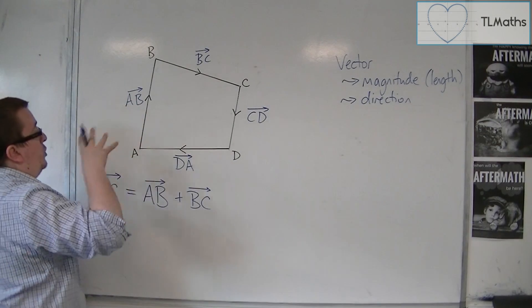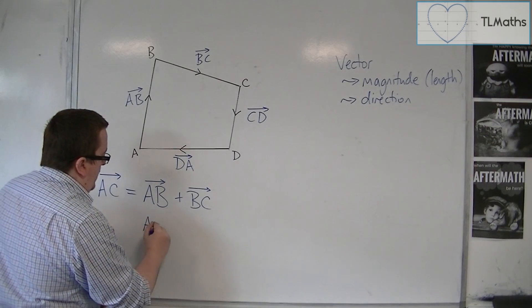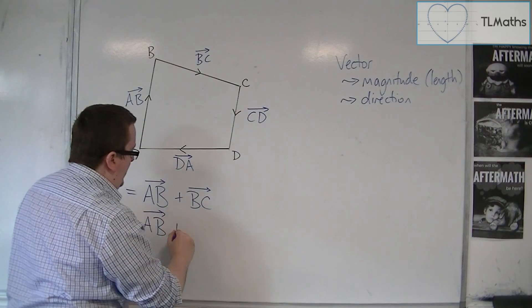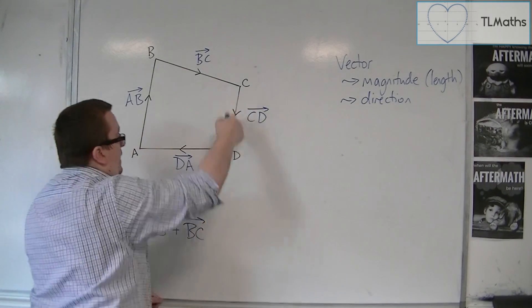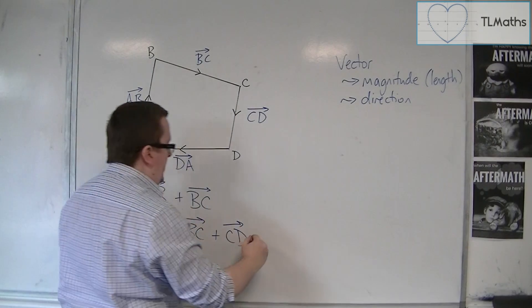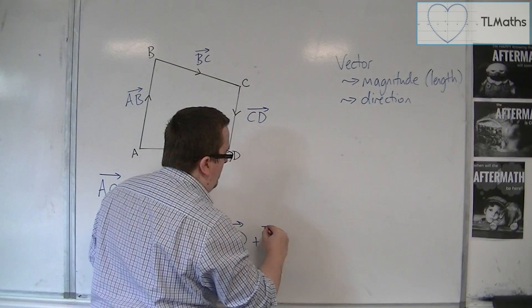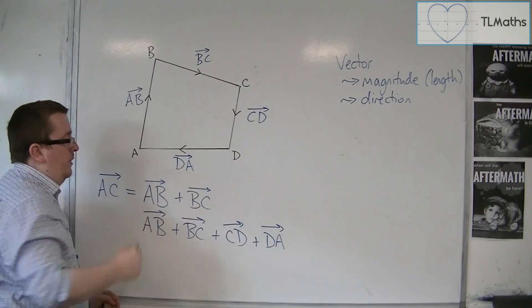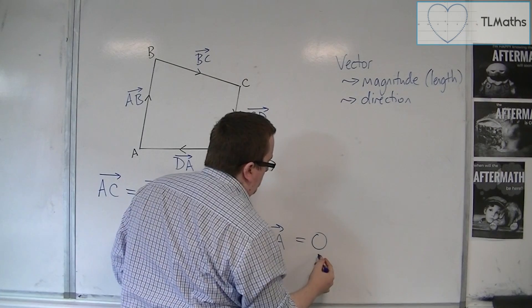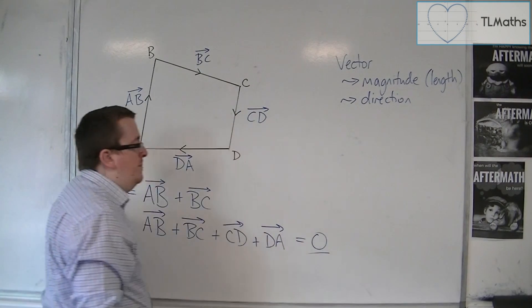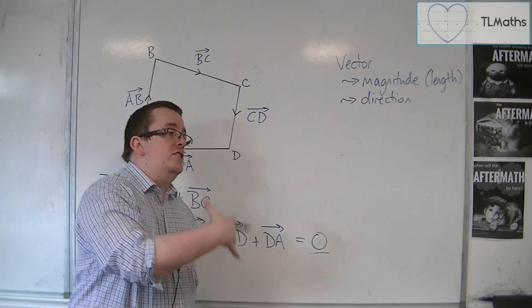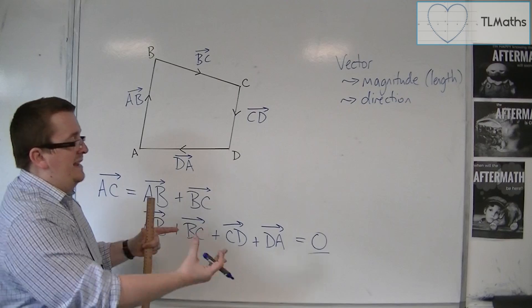Now I could also think about going, if I go from A to B and then from B to C, and then from C to D and then back from D to A, what's happened is that I've actually gone all the way around in a circle and that would just be zero. It would effectively be the zero vector. And you can see that I'm underlining it here. That's not because I'm underlining it as this is the answer.